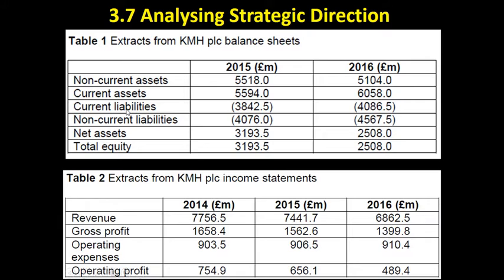We need both the balance sheet and the income statement for this. Payables would be on the balance sheet — it's probably listed under current liabilities, the debts owed in the next 12 months. If there isn't a specific payables figure, we take the current liabilities figure. We also need cost of sales, and if that's not listed, we can calculate it: it's the difference between revenue and gross profit. This is why it's so important to understand these terms and how gross profit is calculated.